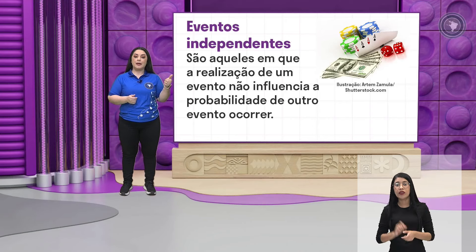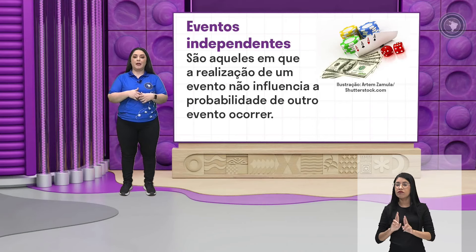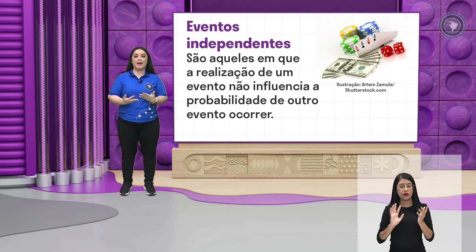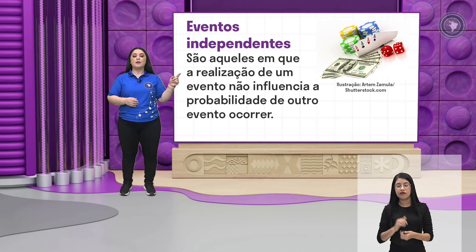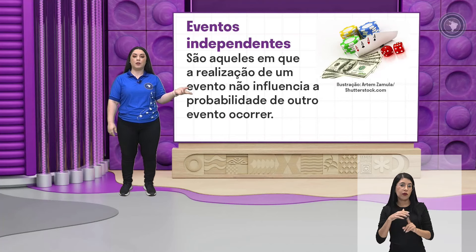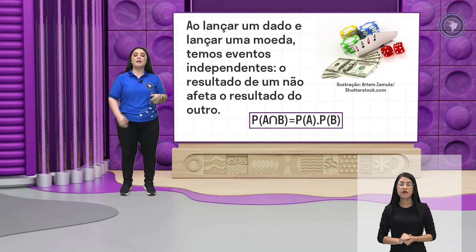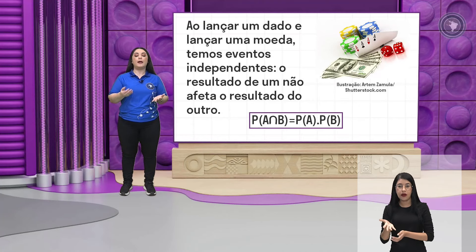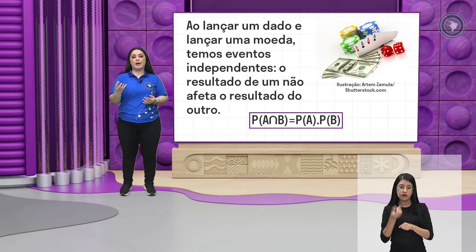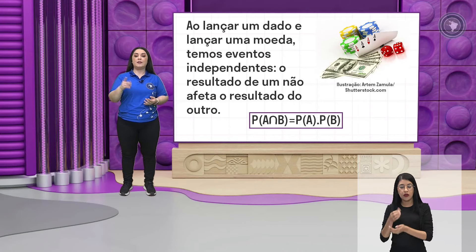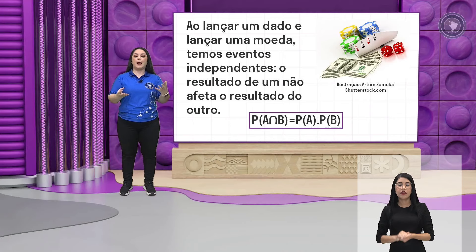Para eventos independentes é o contrário: a ocorrência de um evento não vai influenciar em nada na ocorrência do outro. São aqueles em que a realização de um evento não influencia na probabilidade de outro evento ocorrer. Vamos ver um exemplo: ao lançar um dado e lançar uma moeda, eu tenho um dado de seis faces numerados de 1 a 6, e também uma moeda onde eu tenho cara ou coroa. O espaço amostral da moeda é cara ou coroa.